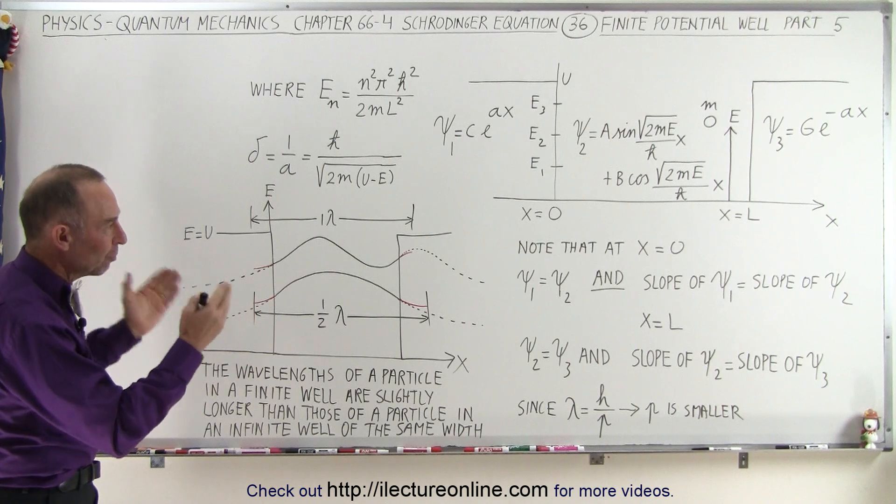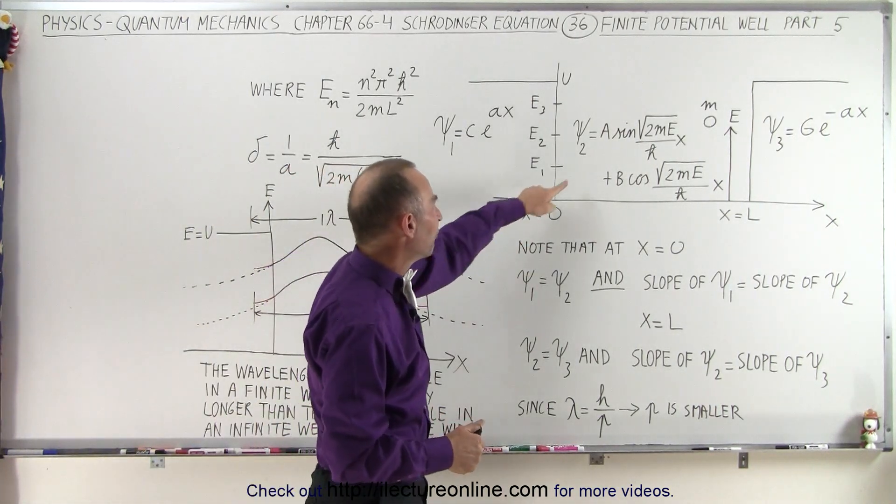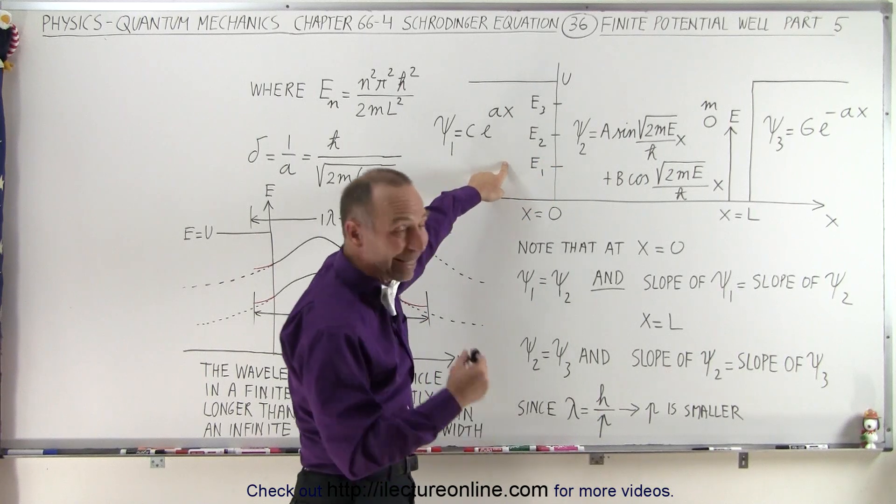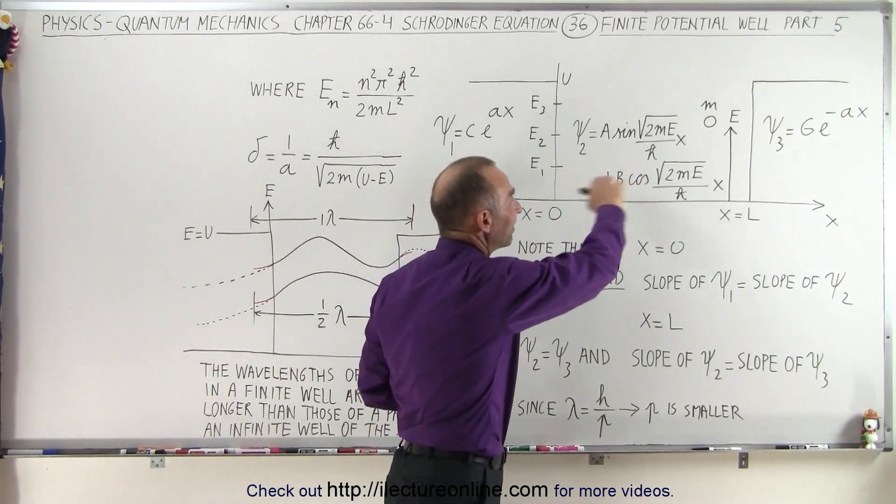In order for the equations to match, we must make sure that at x equals 0, that the value of the function on the left side, inside the barrier, is equal to the value of the function of the particle inside the well.